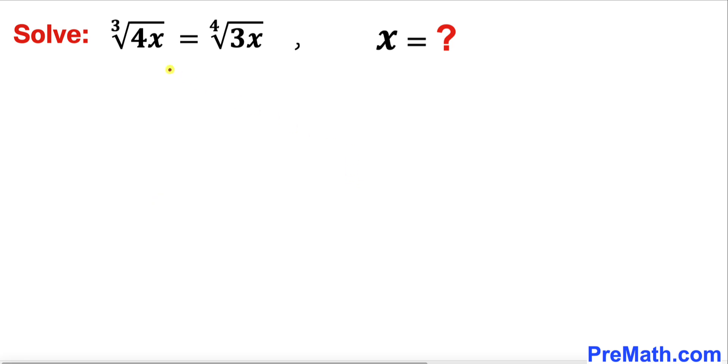Here's the very first step we are going to do. Let's focus on this equation. We can see that our indices are 3 and 4, and now let's recall this rule: the nth root of a could be written as a to the power 1 over n.